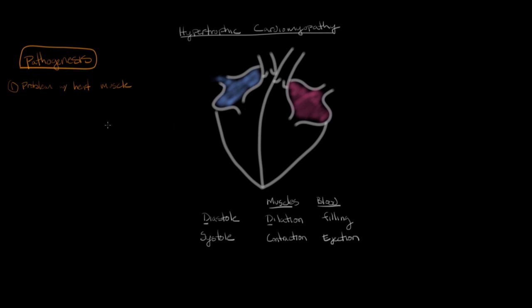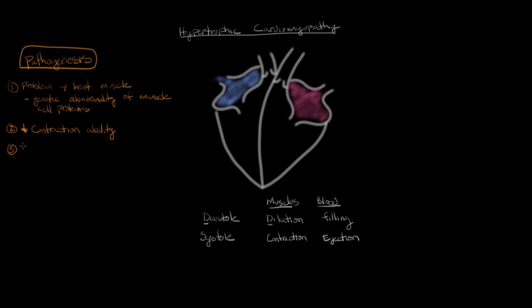In hypertrophic cardiomyopathy, this problem is a genetic abnormality of the muscle cell proteins. Some of these protein abnormalities don't allow the muscle to contract properly. Since the heart muscle isn't able to contract as forcefully, it compensates for this decreased contraction ability by hypertrophying — meaning the cells get bigger.